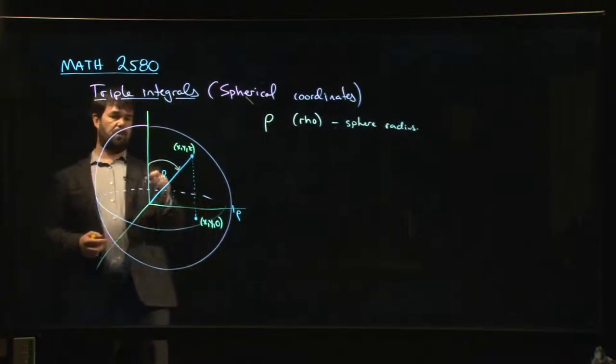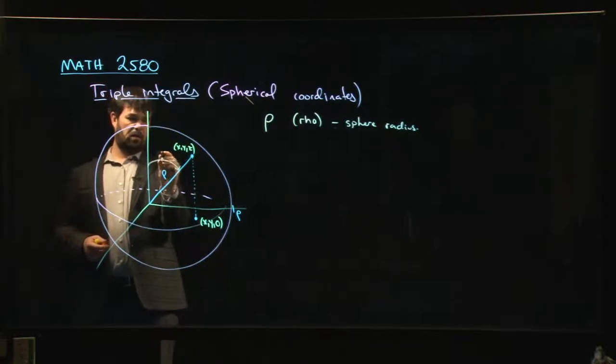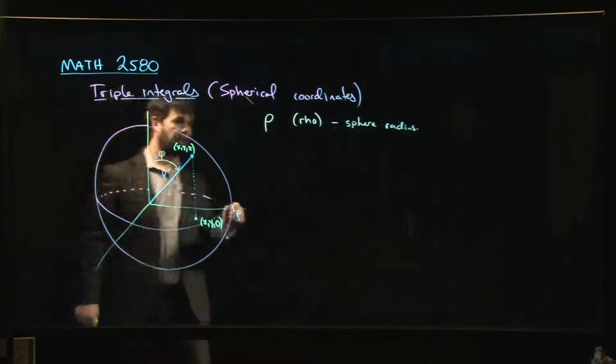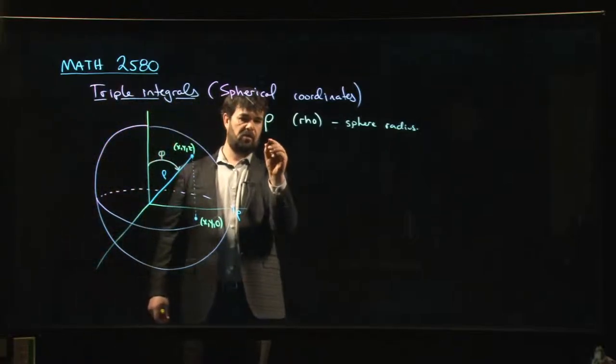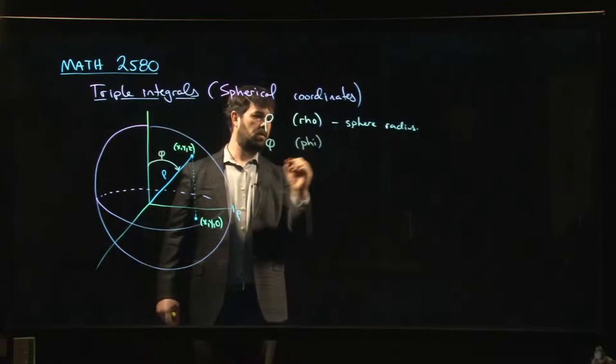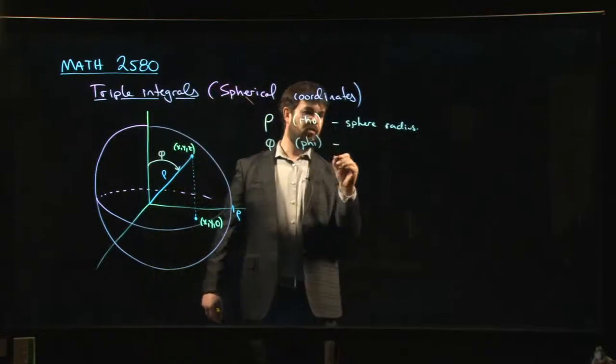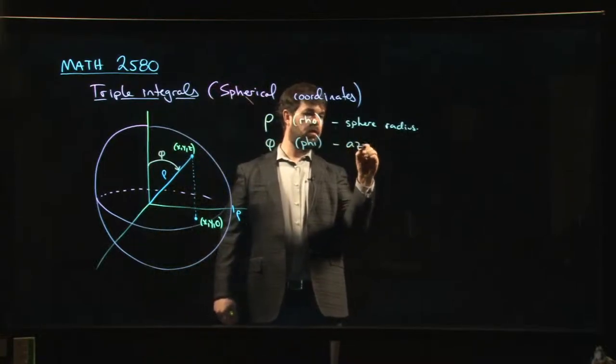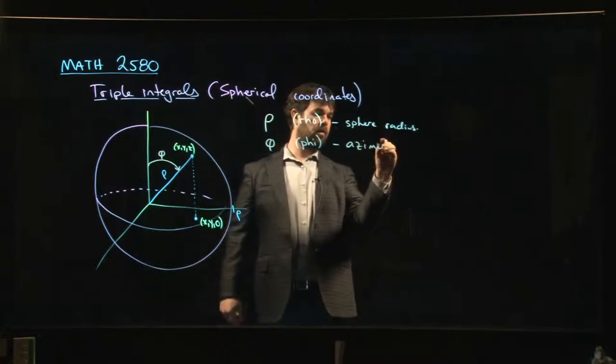Measured from the positive z-axis. So this angle we call phi, depending on how you like to pronounce your Greek letters. This is called the azimuthal angle.